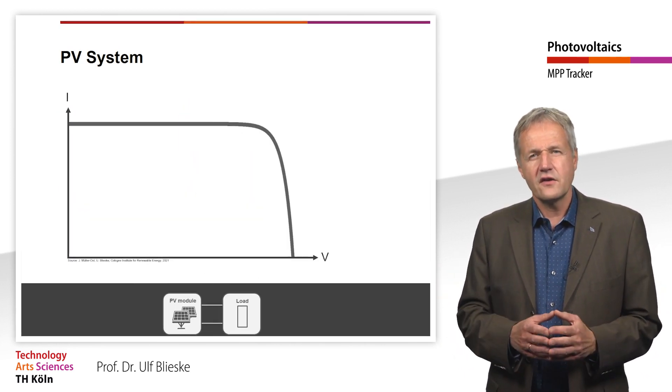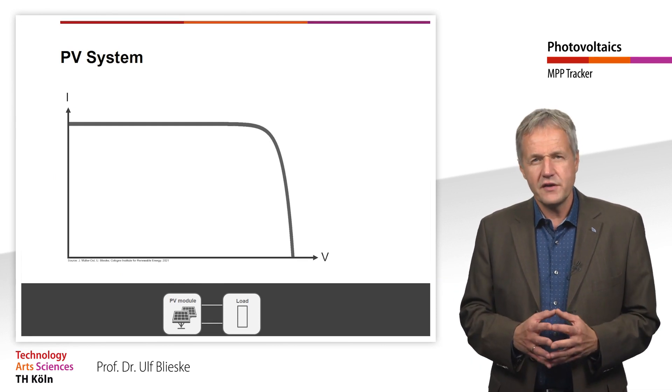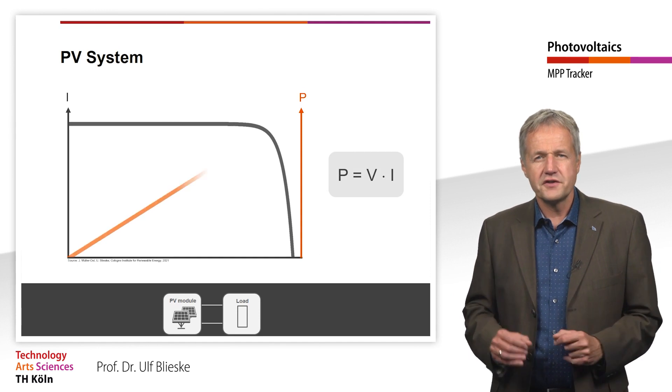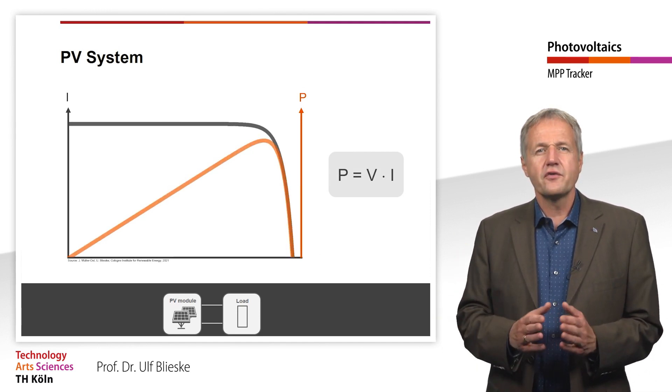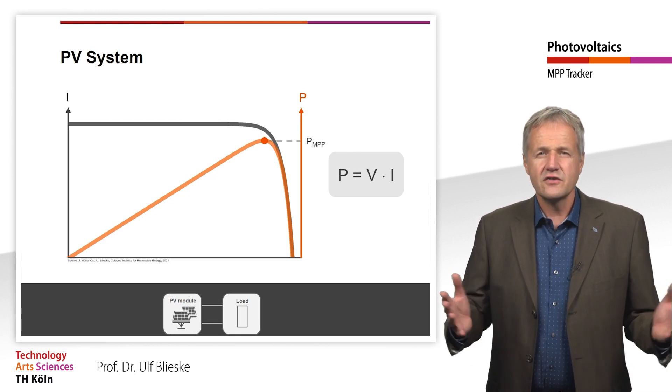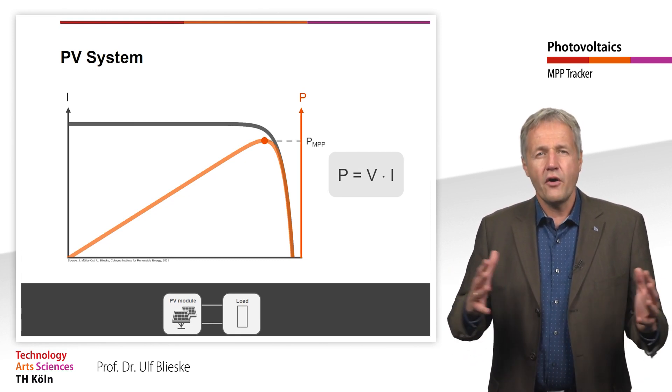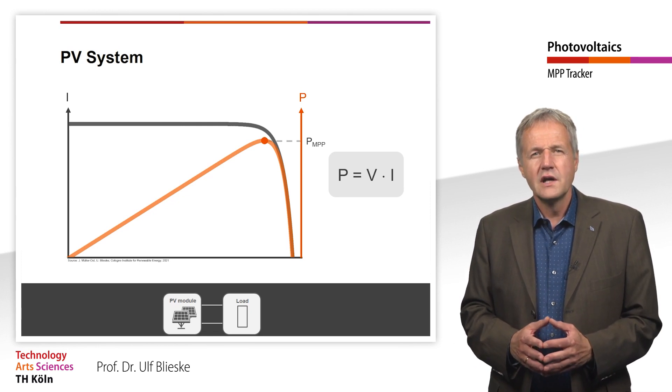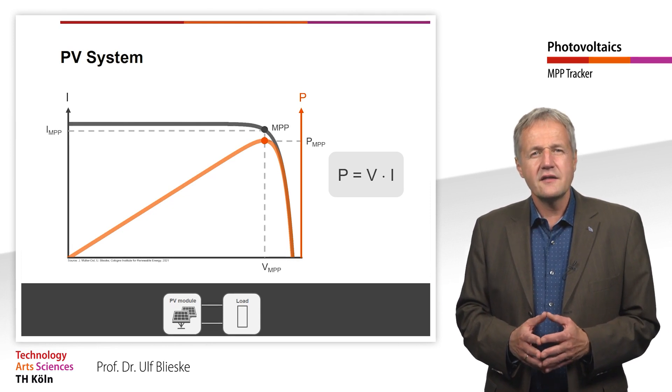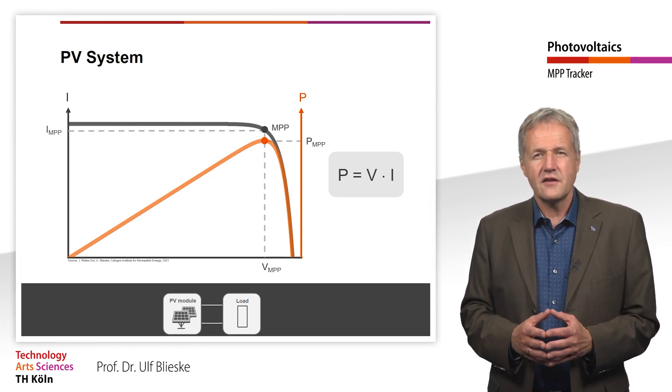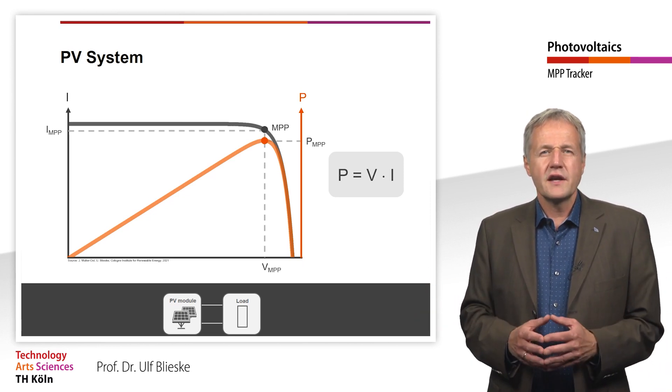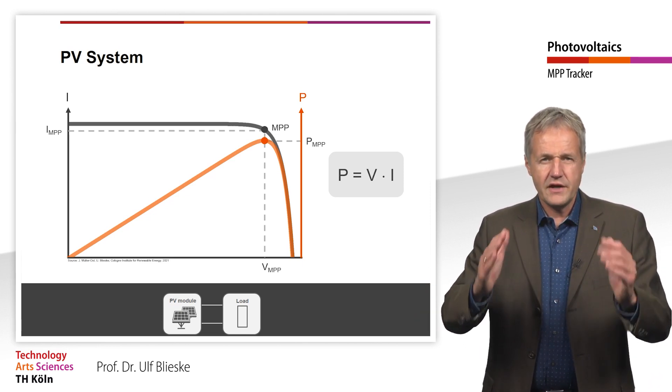Here you can see the familiar IV curve of a PV module. The power is the product of current and voltage. The PV characteristic therefore results directly from the IV characteristic. It is easy to see that there is a point of maximum power. We recall the associated voltage VMP and the associated current in the VI curve IMPP.